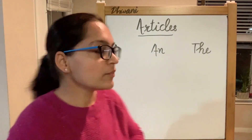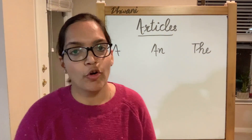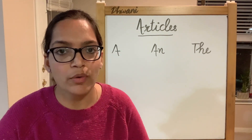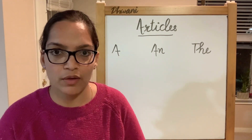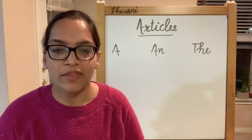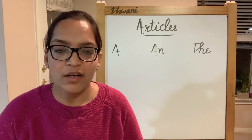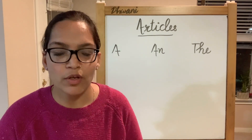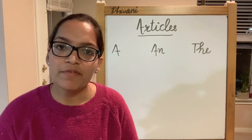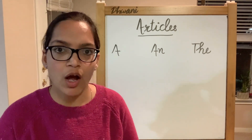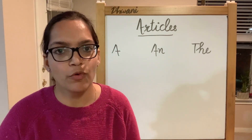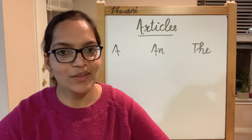If both a and an point to the singular noun and both talk about non-specific, indefinite nouns, then what is the difference between a and an? The difference is: when our noun begins with a consonant sound, we use a before the noun. But if our noun begins with a vowel sound, then we use an before the noun. Let's understand with examples.